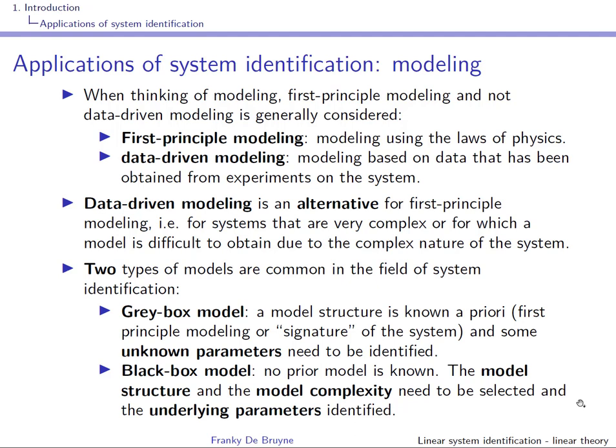When we think about modeling, we often think about first principle modeling rather than data-driven modeling. First principle modeling uses the laws of physics, whereas data-driven modeling is based on data obtained from experiments on the system. Data-driven modeling is an alternative for systems that are very complex or for which a model is difficult to obtain.